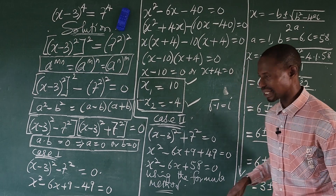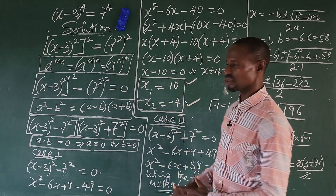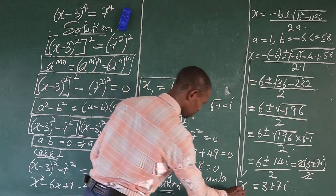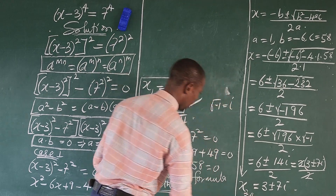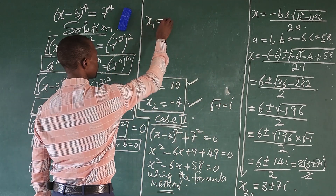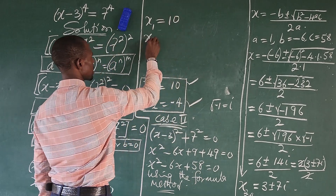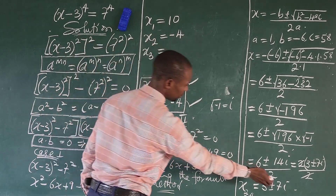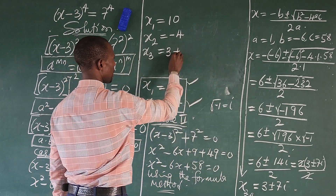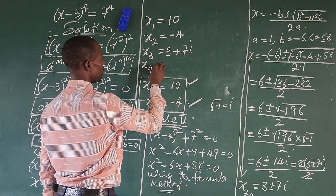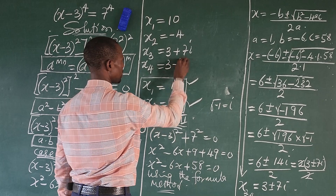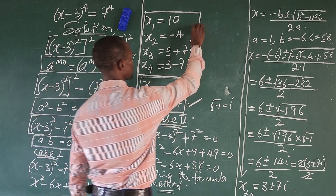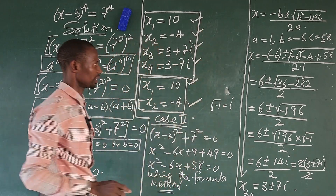In all, here we have x3 and x4. So let's bring out all 4 roots to this challenge. We have x1 equal to 10, x2 equal to minus 4, x3 is 3 plus 7i, and x4 is 3 minus 7i. So these are the four roots — first one, second one, third one, and the fourth one.